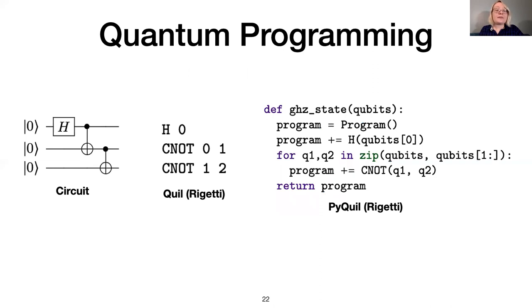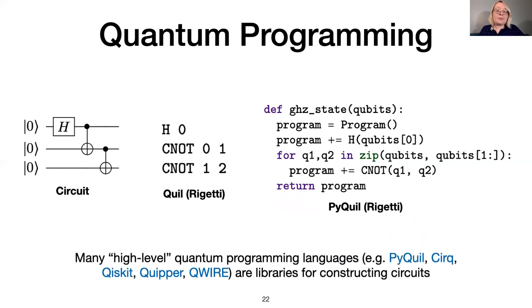The arguments to a multi-qubit gate are usually distinguished as being a control or a target. Here we show the circuit from the previous slide, written as a list of gates and as a high-level program. Quil is Rigetti's intermediate representation, which was one source of inspiration for SQUIRE, and PyQuil is Rigetti's framework for constructing Quil programs. The GHZ state function produces the Quil program on the left when given the list 0, 1, 2 as input. Like PyQuil, many quantum programming frameworks, including Cirq from Google, Qiskit from IBM, and academic languages Quipper and QWIRE, are really tools for describing and manipulating circuits. We follow this model in our design of SQUIRE. SQUIRE programs are simple lists of gates describing circuits, and we use the Coq host language to metaprogram.